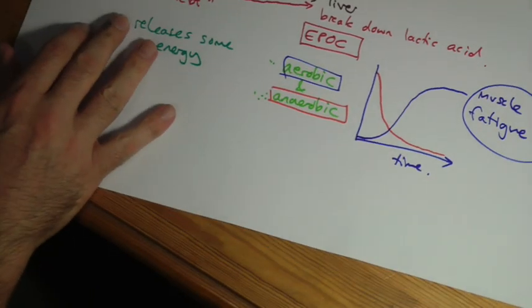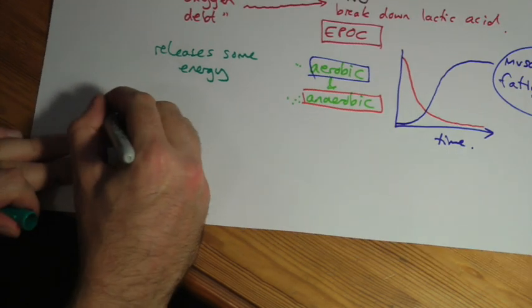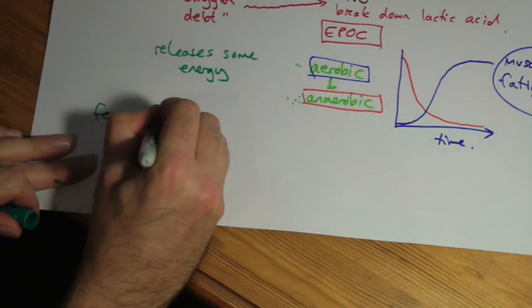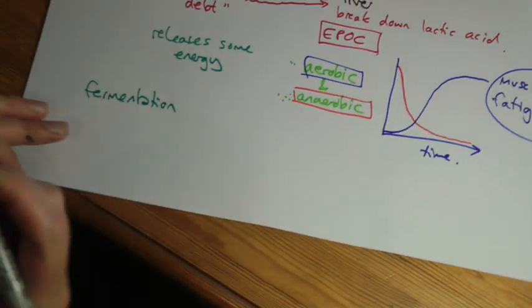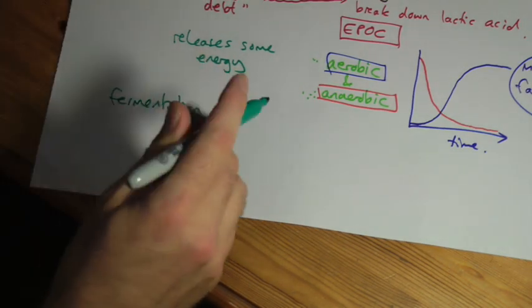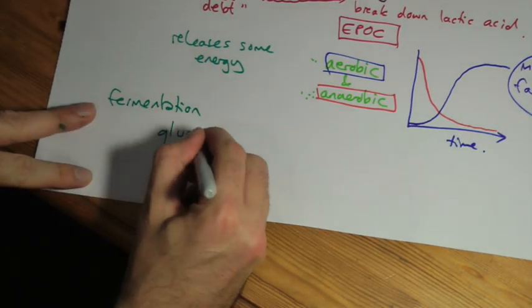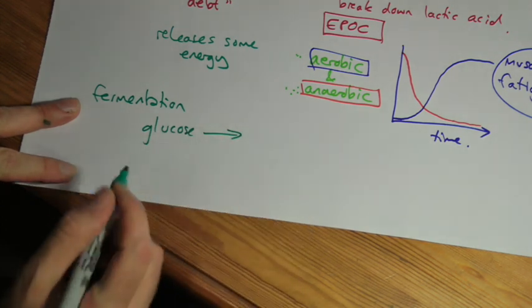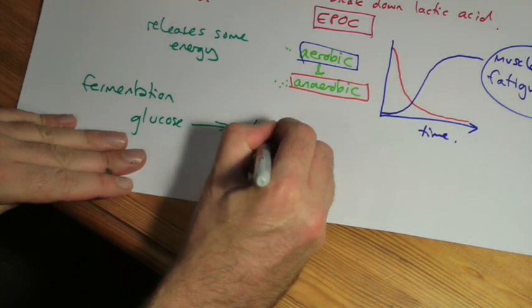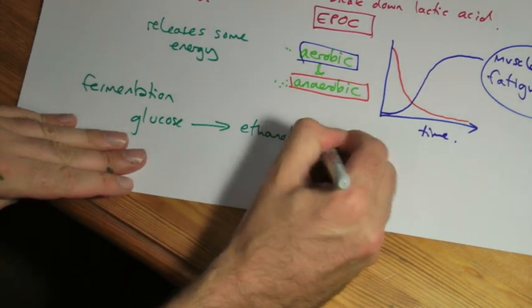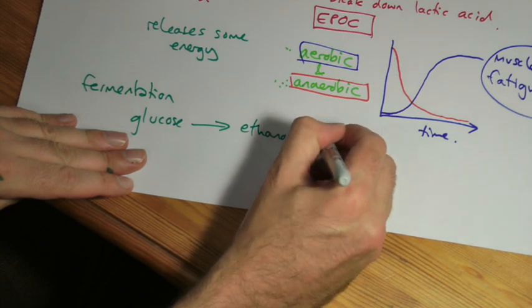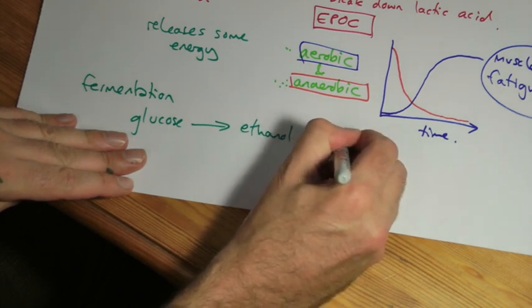The second type of anaerobic respiration is also known as fermentation. And this would occur in fungi, some fungi and plant cells. Again, it starts off with glucose. We convert it into ethanol or alcohol and carbon dioxide.